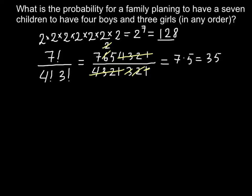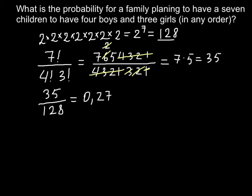The answer is 35, so the probability to have 4 boys and 3 girls is 35 out of 128. If we divide these numbers we get approximately 0.27, rounded to two decimal places.